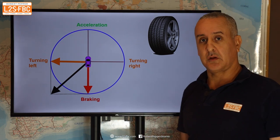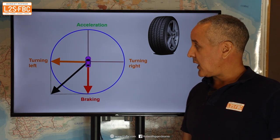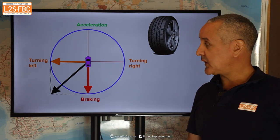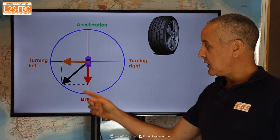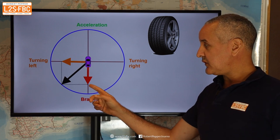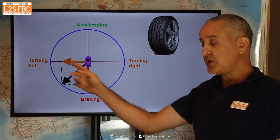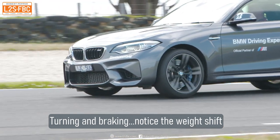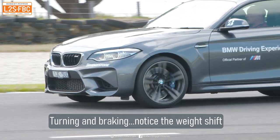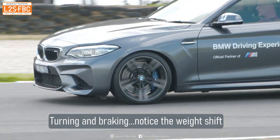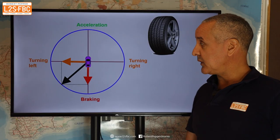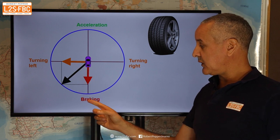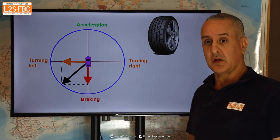So how do we fix it? We're outside the grip limits at the moment. What we can do is simply reduce the amount of braking and reduce the amount of turning, and that brings the arrow back to touching the limit. So there's the amount of turning and braking we can do simultaneously.